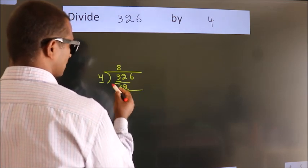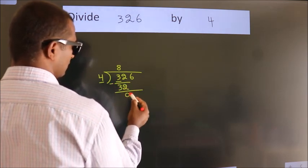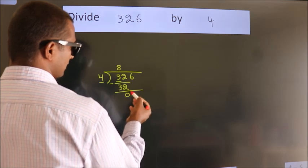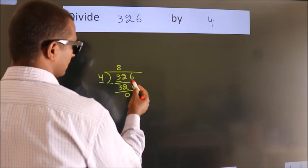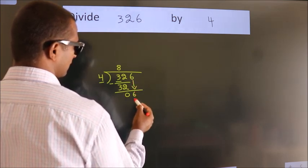Now we should subtract. We get 0. After this, bring down the beside number. So 6 down. So 6.